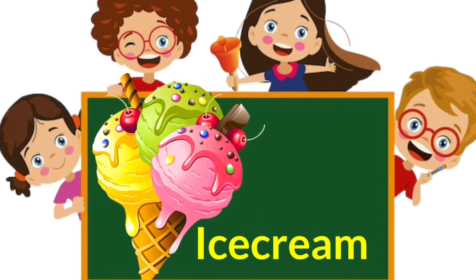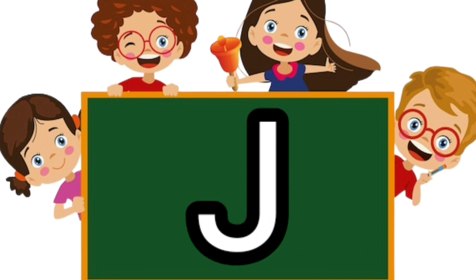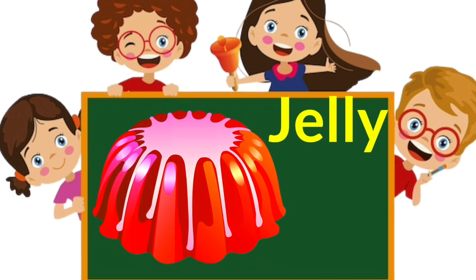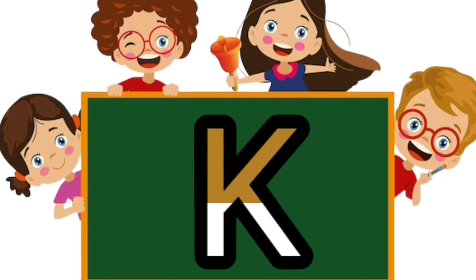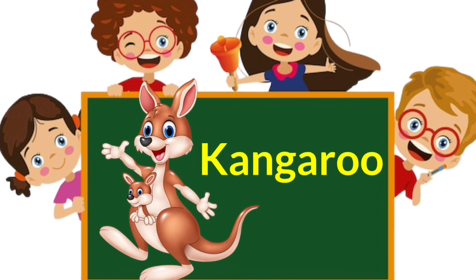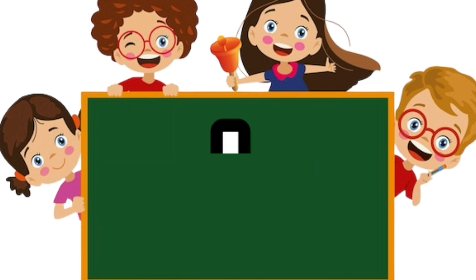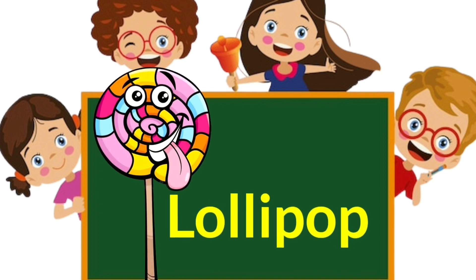I. I is for Ice Cream. J. J is for Jelly. K. K is for Kangaroo. L. L is for Lollipop.